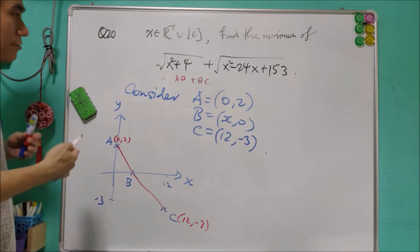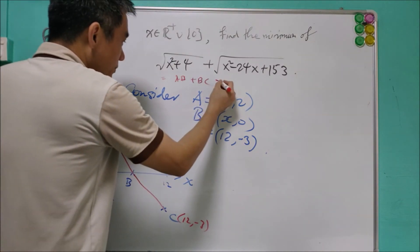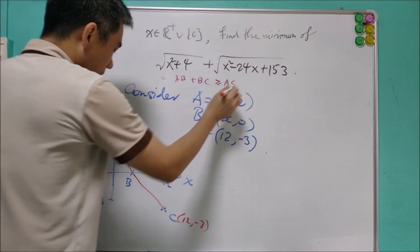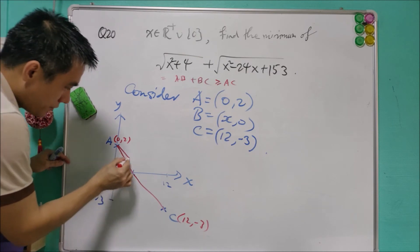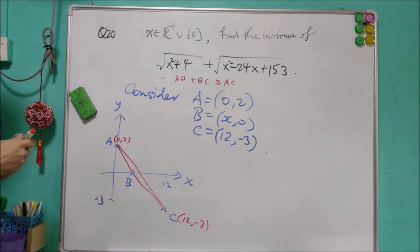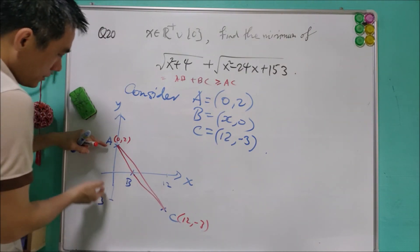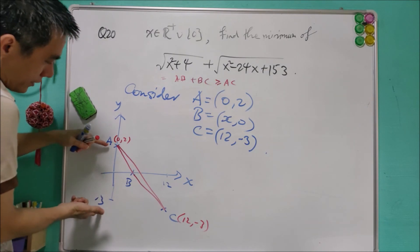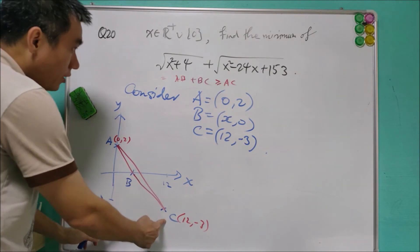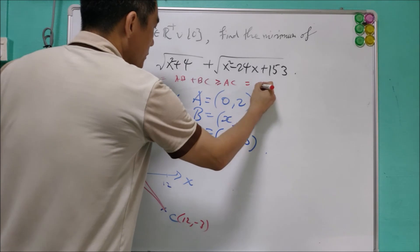And from Pythagorean theorem, and from triangle inequality, we know that this will be greater or equal to AC. Where AC is equal to this one. From the geometric coordinates, this is 2, 3. Again, this is 5. This is 12. So this will be equal to 13.